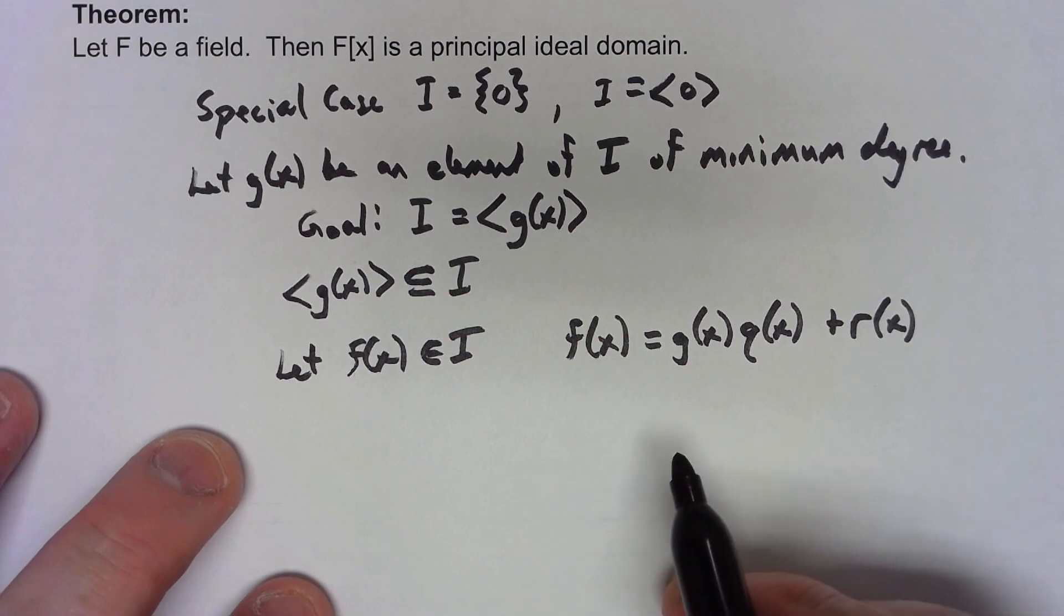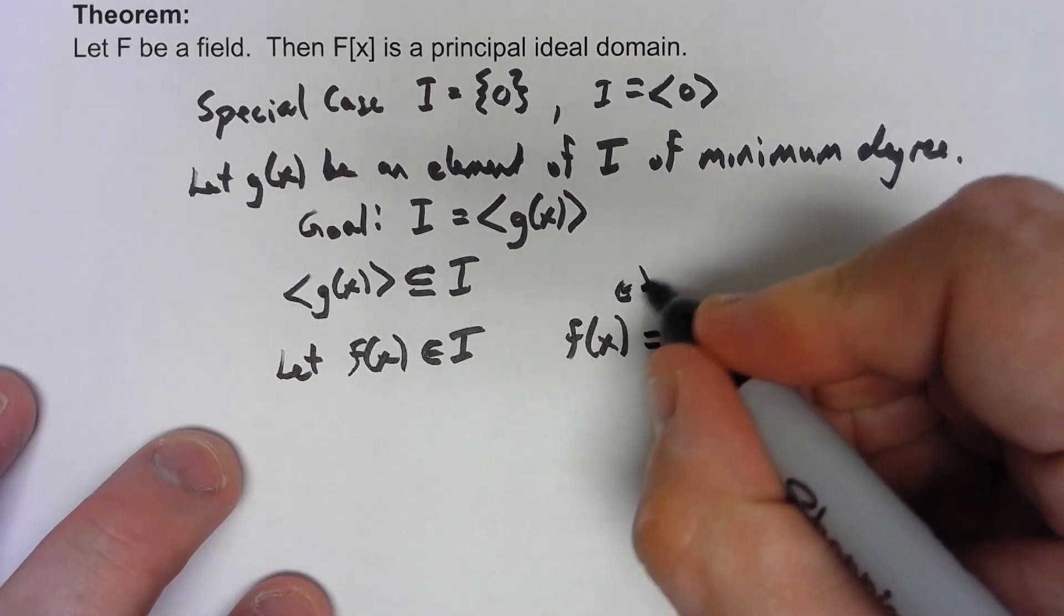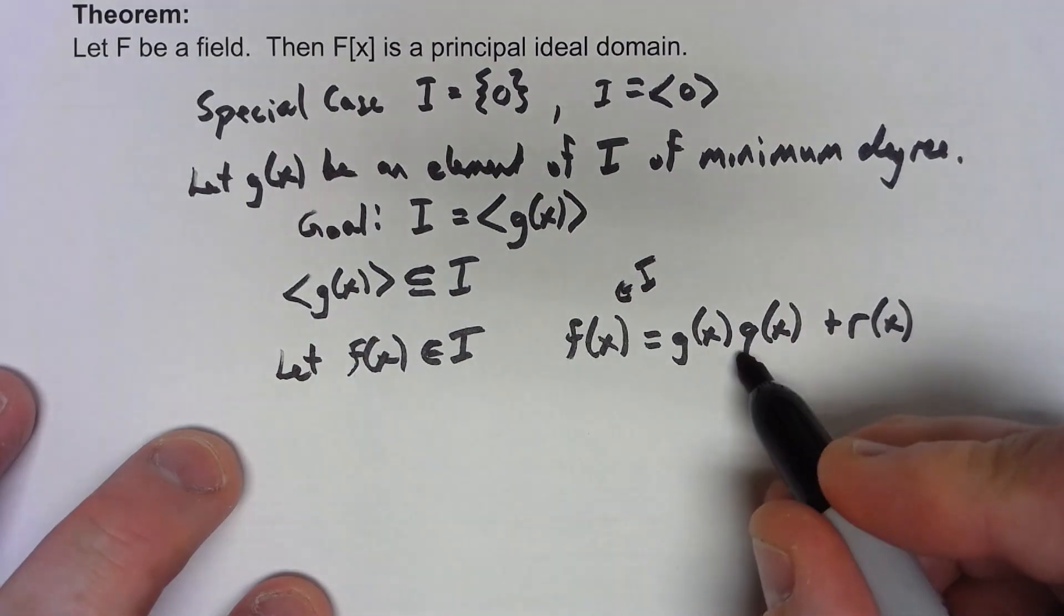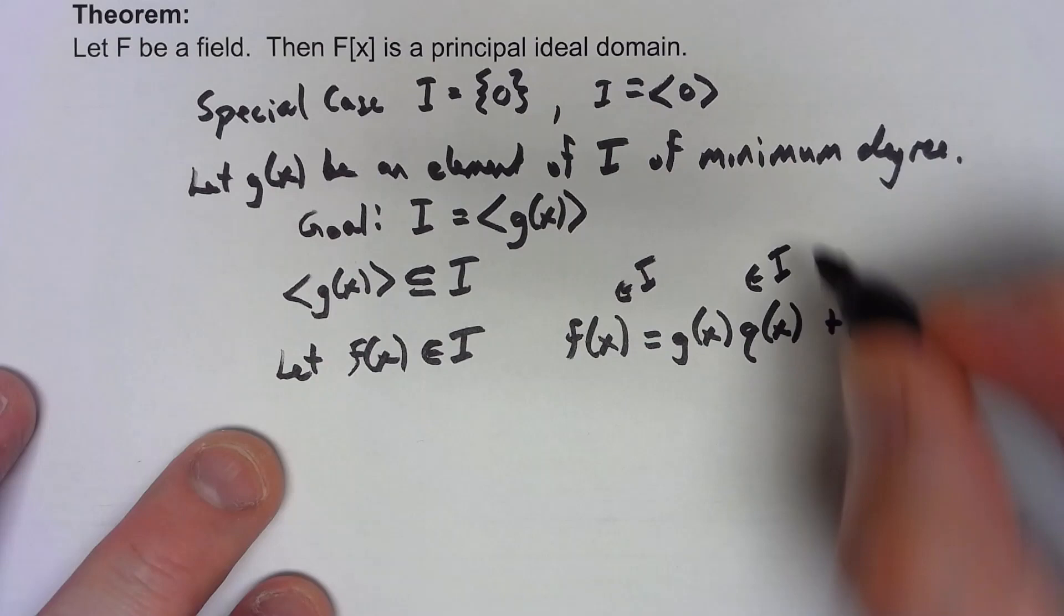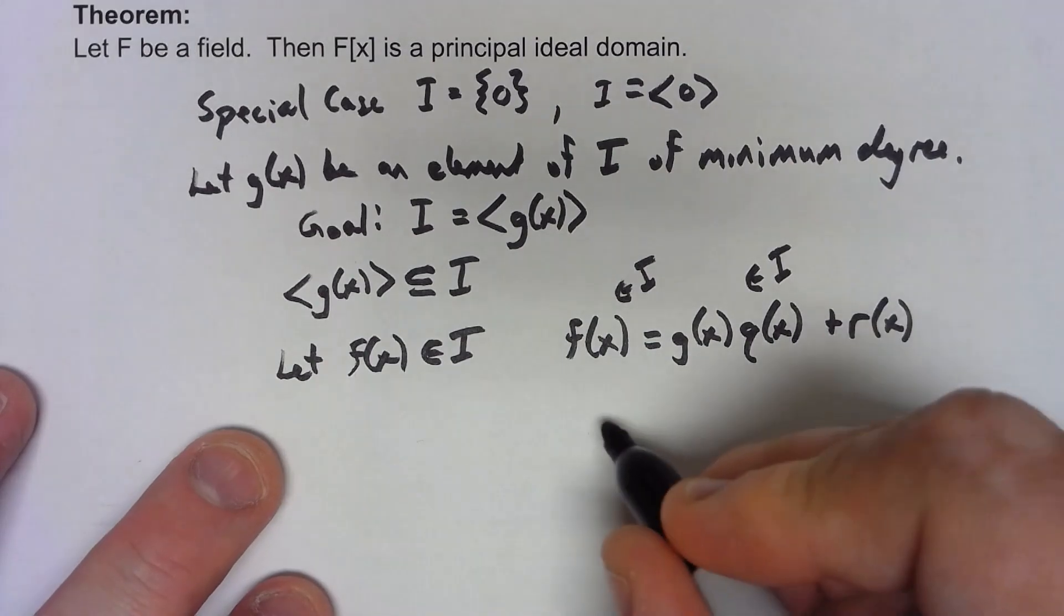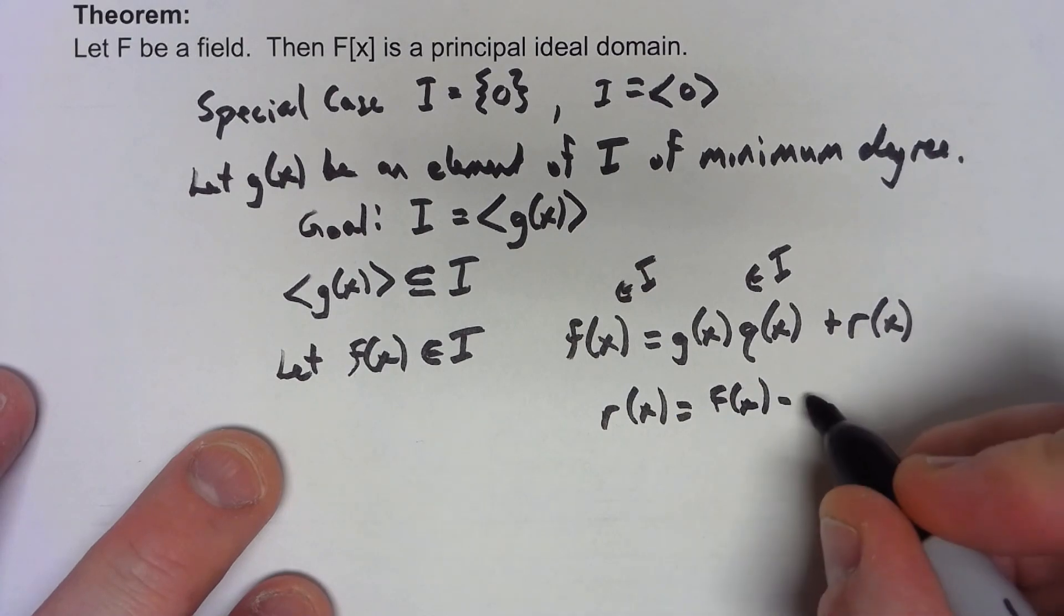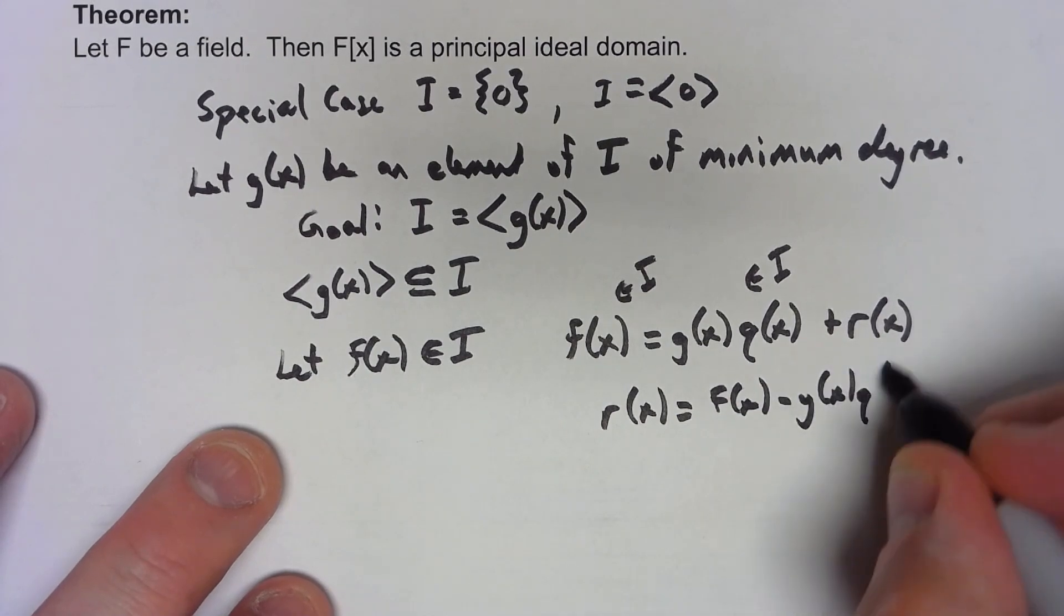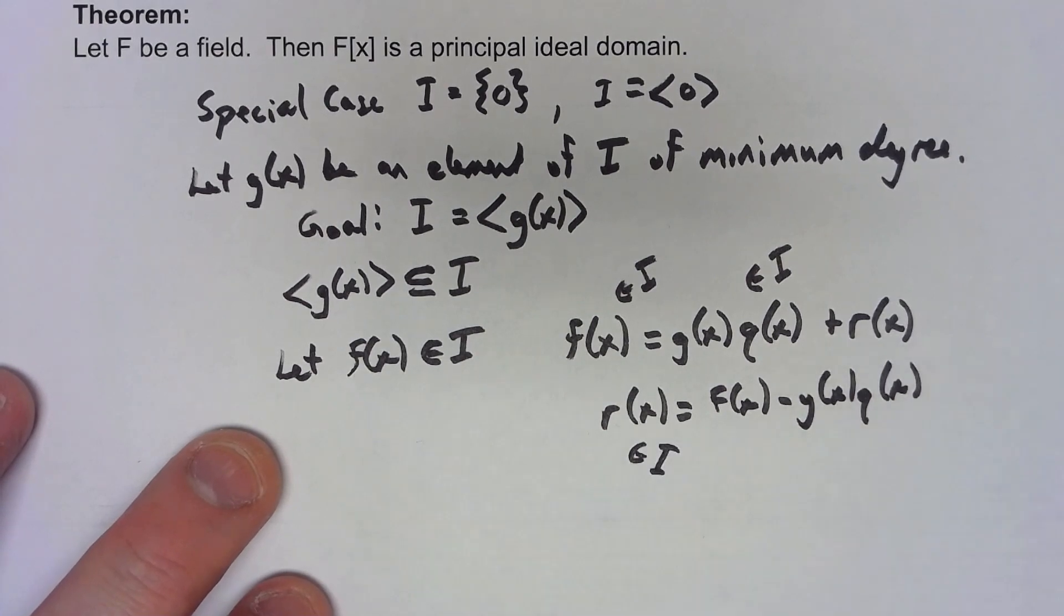Okay, but hold on. This is in the ideal, and certainly since this is a subset of the ideal, this is in the ideal. So if I say r(x) is equal to f(x) minus g(x)q(x), that must mean that r(x) is in the ideal, because adding two things in the ideal, you have to get something in the ideal.